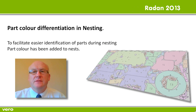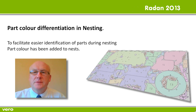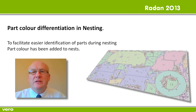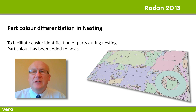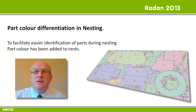Customers have been telling us that sometimes when unloading components from a nest, operators find it difficult to identify the individual parts. With this in mind, what we've done in this release of software is added an enhancement to the nester whereby parts can be differentiated by use of colour. This really does make identifying different components much easier. Let me show you how this works.